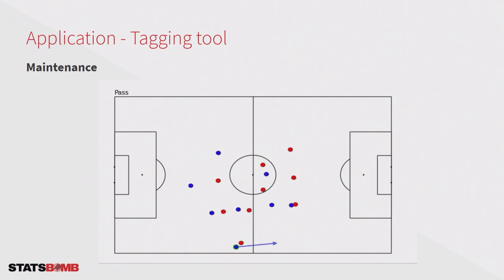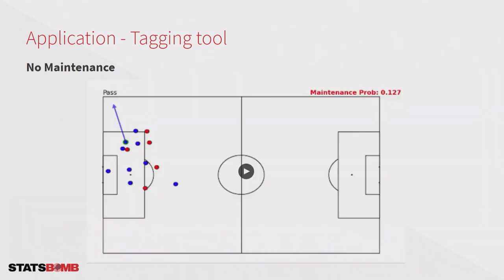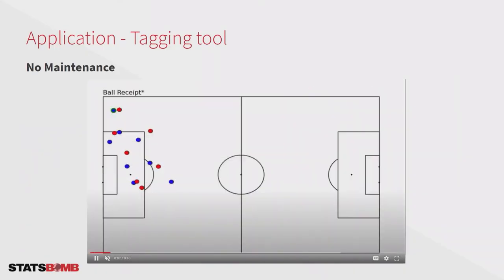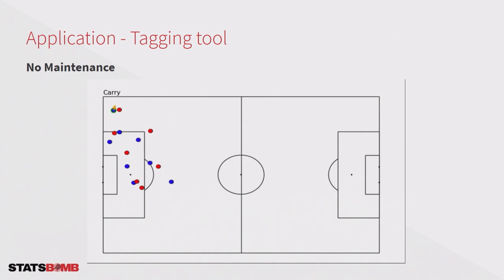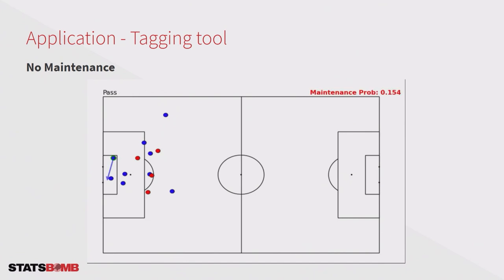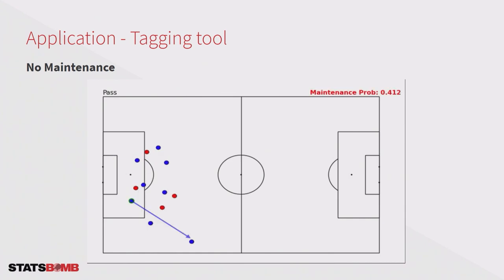Then I ask my model to show me an example where there is a sequence of passes in their own field but which cannot be considered maintenance. It shows me examples like this: all the passes look like the blue team is just trying to escape pressure. These appear to be risky passes — for example, here we have a pass to the keeper, but it's a risky pass. For this reason the model says it is not a maintenance phase. And finally the blue team loses the ball.